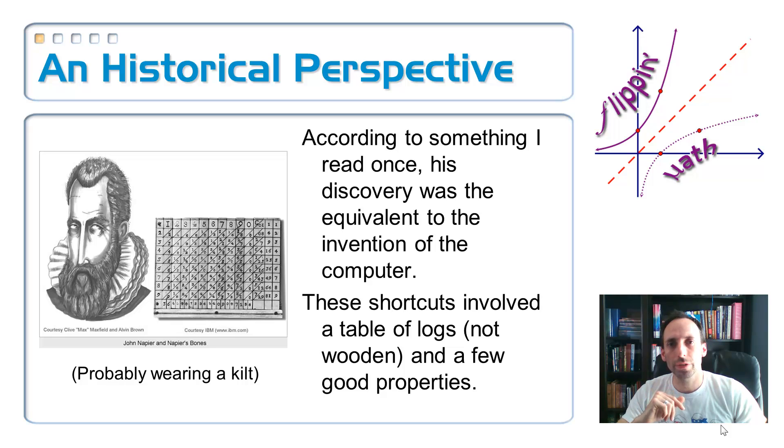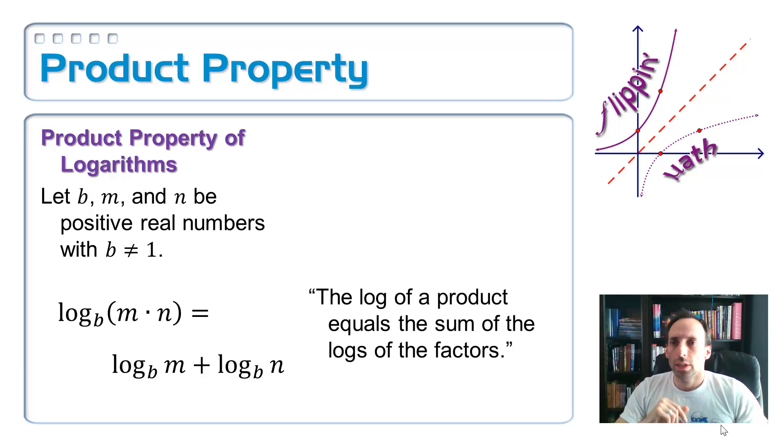So, let's take a look at the first property, shall we? The first property is called the product property of logarithms. So, the setup on this is B, M, and N are just positive real numbers. B being the base, of course, it always has to be a positive number. And then M and N, just two other positive real numbers. Of course, the base B is not zero.